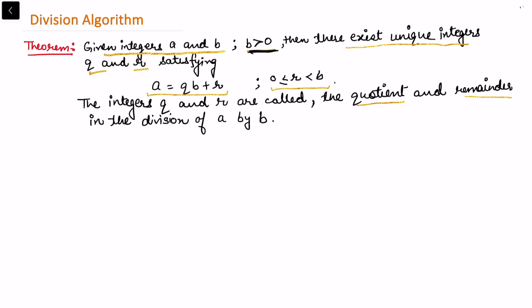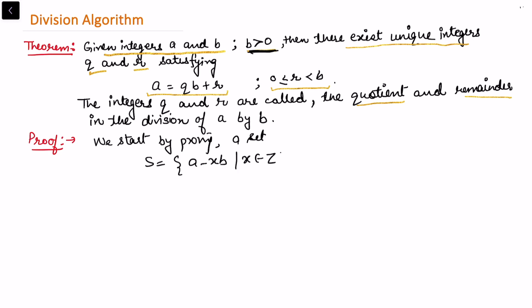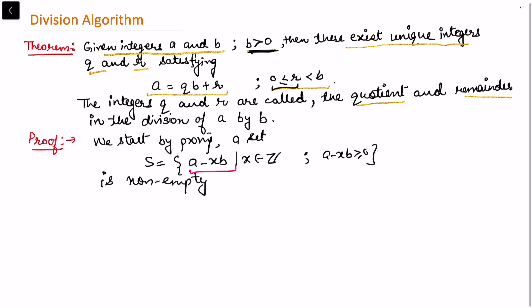For the proof, we begin by considering a set S defined as S = {a − xb | x ∈ ℤ and a − xb ≥ 0}. We want to prove that this set is non-empty so we can apply the well-ordering principle. Notice that the expression a − xb is related to the remainder, since from a = qb + r we get a − qb = r.